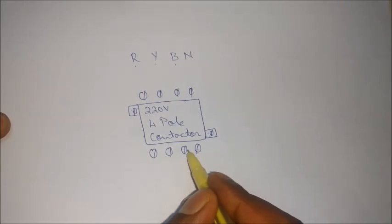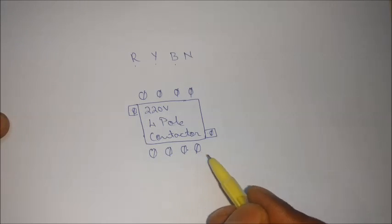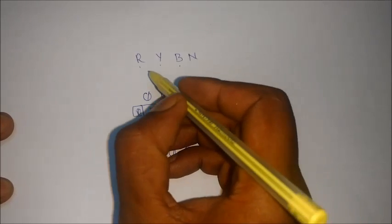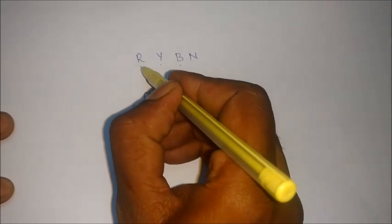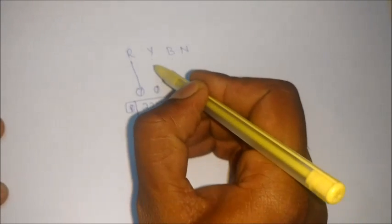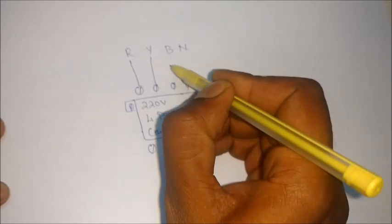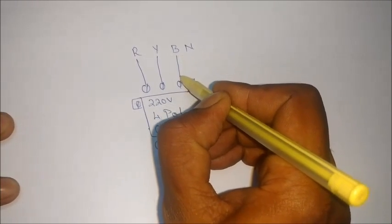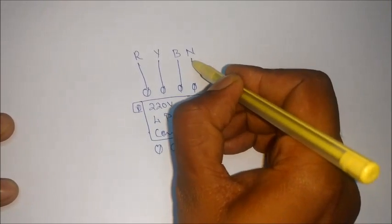In these 4 terminals the load is connected. So to start off with the connection, the red is linked to the first terminal, Y is linked to the second terminal, B is linked to the third terminal, and neutral is linked to the fourth.